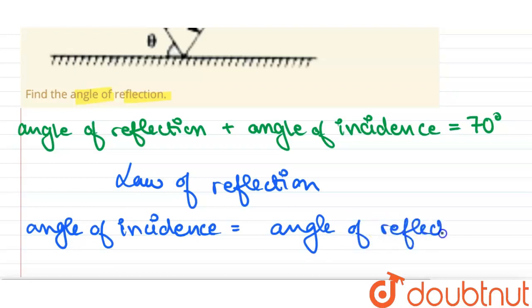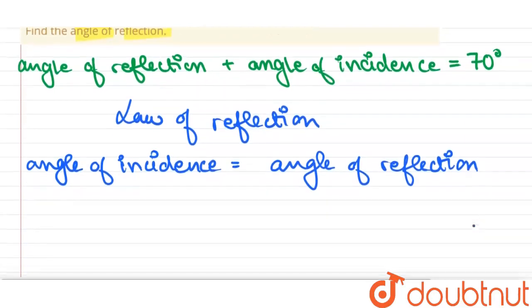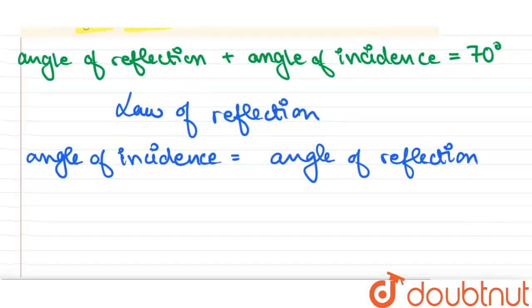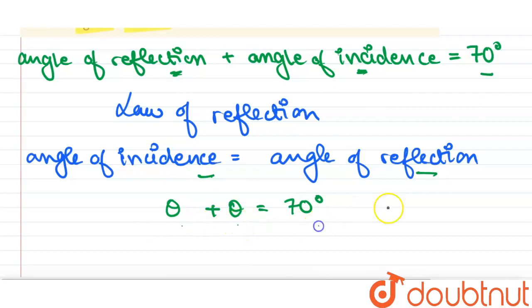Now, because angle of incidence is equal to angle of reflection, we can say theta plus theta is equal to 70 degrees. Because it is given that angle of reflection plus angle of incidence is 70. If angle of incidence is theta, angle of reflection will also be theta. So theta plus theta equals 70. From here, 2 theta is equal to 70 degrees.